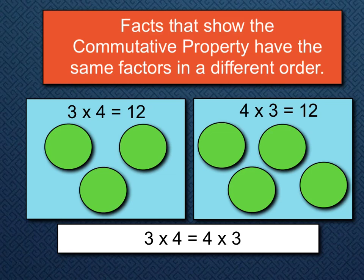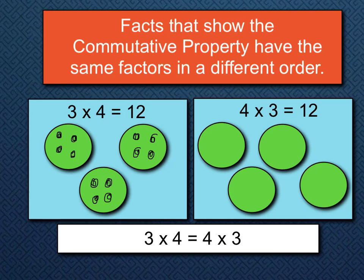So let's draw a model. For three times four — that's three groups of four in each group. One, two, three groups, and four in each group: four, eight, twelve. Yes, I have that there. Three times four equals twelve over here.